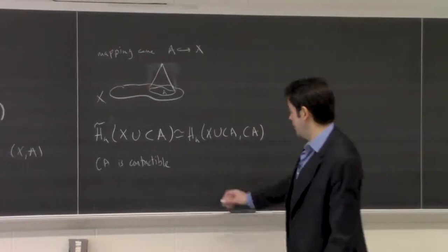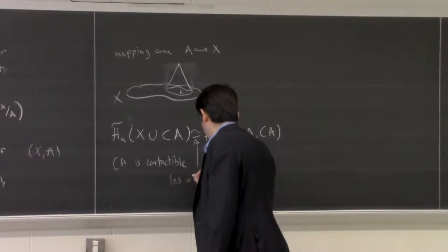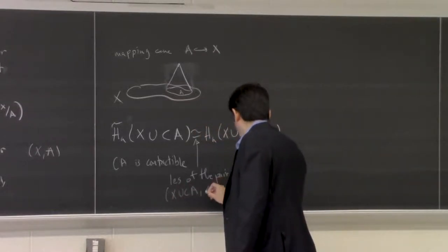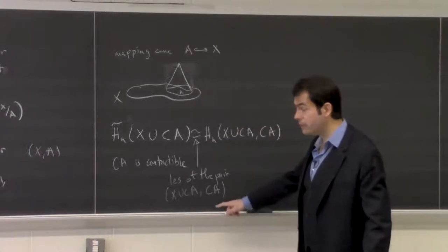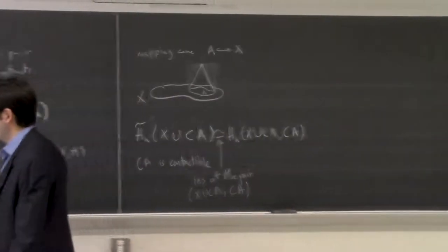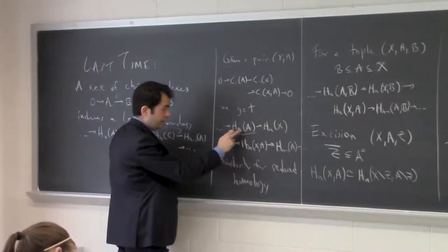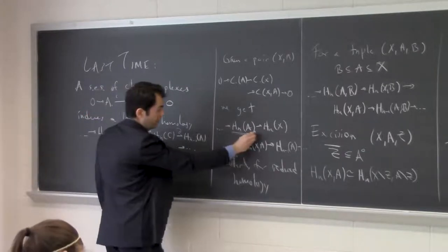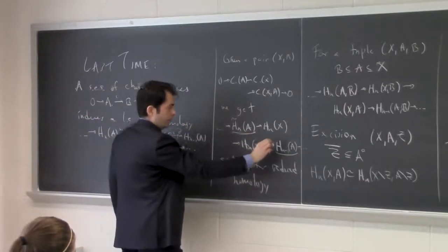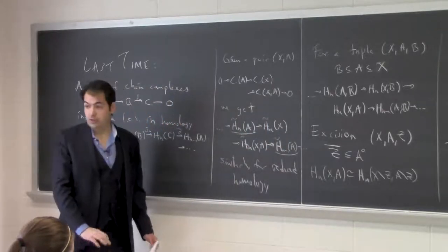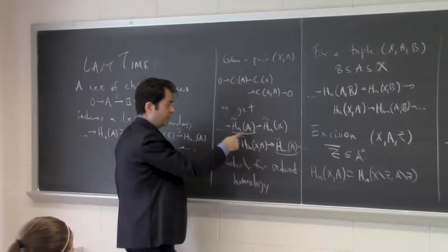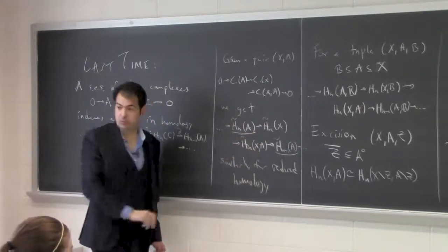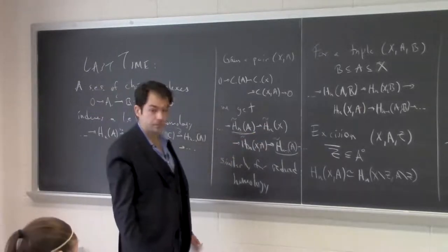To clarify: this comes from the long exact sequence of the pair (X ∪ CA, CA). The cone on A plays the role of A in that pair, so its reduced homology terms are zero. If you have a long exact sequence and every third group is zero, then the map between the other two groups has to be an isomorphism.